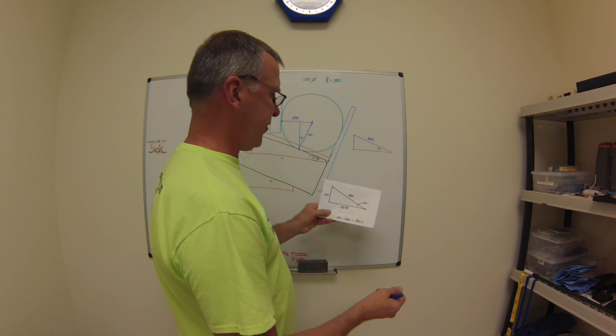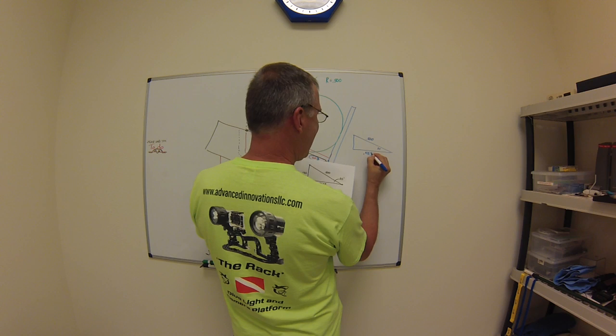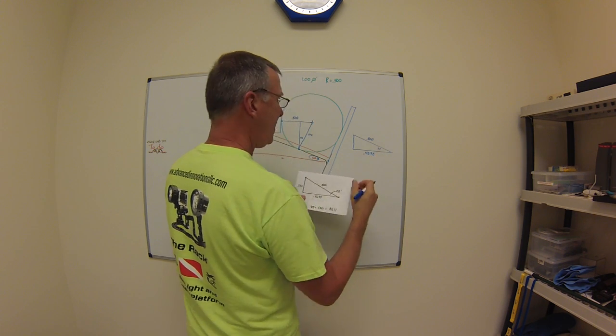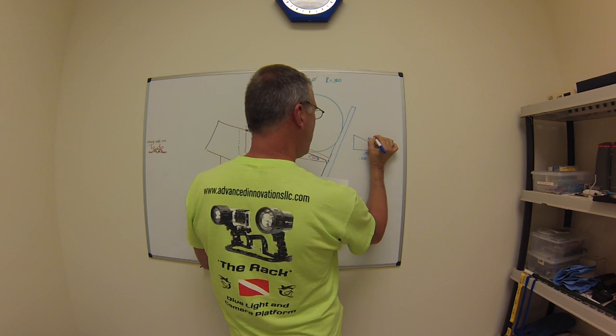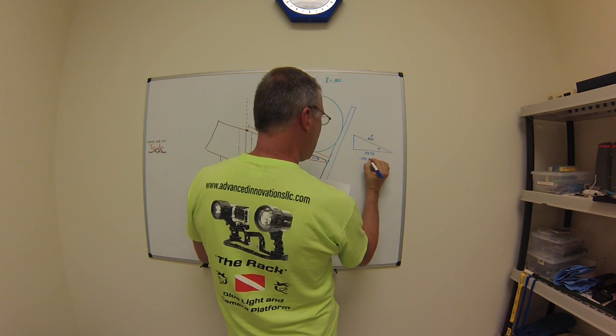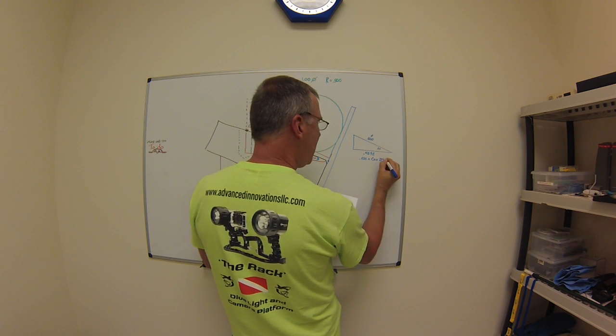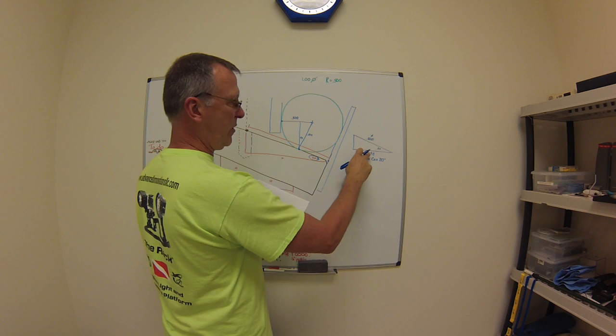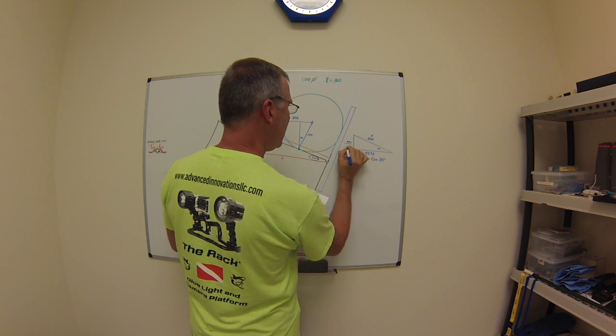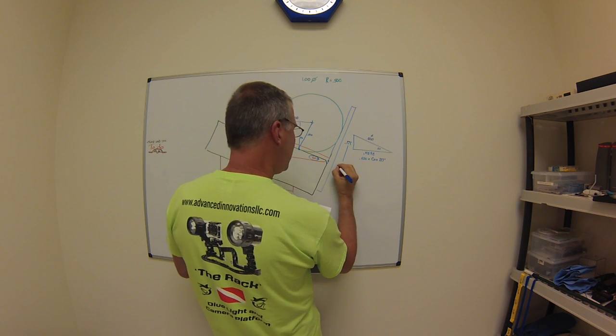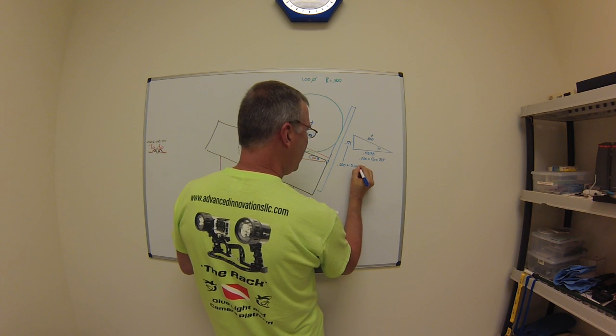So these are the values that you're going to come up with. This is going to be 0.4698, and that is 0.500, which is this one, times the cosine of 20 degrees.